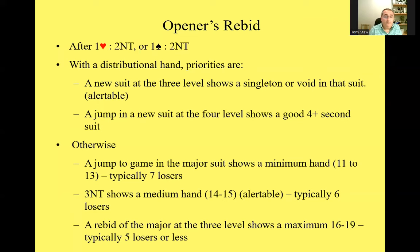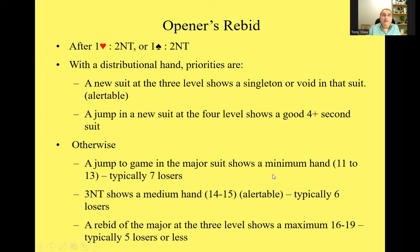Knowing the number of losers you're showing can help your partner decide whether you're in slam territory or not. We'll look at some examples in a moment. The slides for this are on the website because one disadvantage of this convention is that it is quite a lot to remember. But the logic of the strength-showing responses is: with a weak hand, you just bid game — that shows less interest. The stronger your hand, the less you bid. Three no trump is the medium hand, and three of the major is the strongest hand.